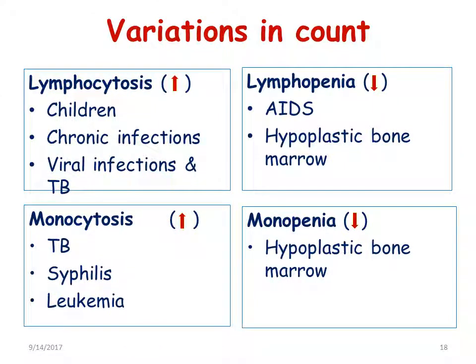Lymphocytosis is when the lymphocyte count increases above the normal range; lymphopenia is when it decreases below normal. Lymphocytosis is seen in children, chronic infections, viral infections, and tuberculosis. Lymphopenia is associated with AIDS and hypoplastic bone marrow. Monocytosis is an increase in monocyte count, seen in tuberculosis, syphilis, and leukemia. Monopenia is a decrease, found in hypoplastic bone marrow.